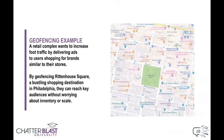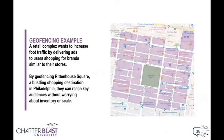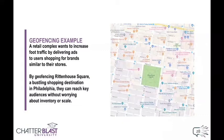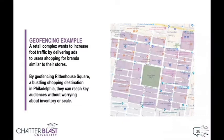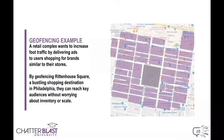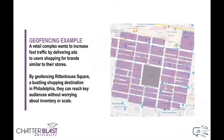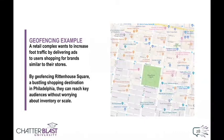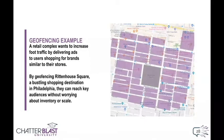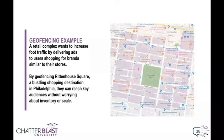A great example of geofencing is for a retail complex that's trying to increase foot traffic. They could target Rittenhouse Square — a busy shopping district in Philadelphia — and they can get as many people as they want by just fencing off specific stores that match brands that are similar. By doing this, all of those people walking around are available for impressions, without having to worry about inventory issues or scale issues if they wanted to increase their spend. It's an excellent tactic for digital advertising.